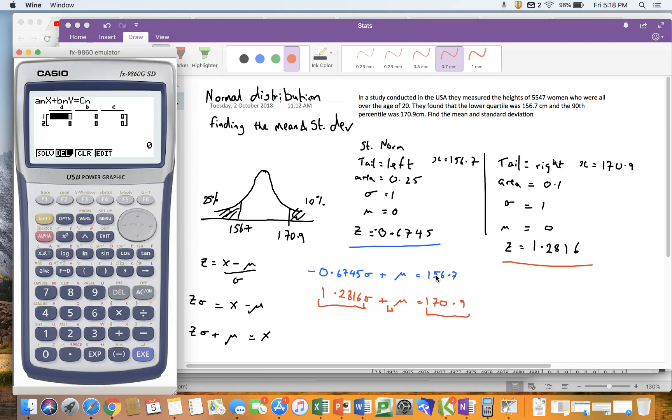So I'm going to take the coefficient of sigma, I'm going to take the coefficient of mu, and I'm going to take the number. Of course, the coefficient of mu, as there's no number written there, must be 1. So I've got 1.2816, 1, 170.9, and I've got minus 0.6745, 1, 156.7, and when I click solve...